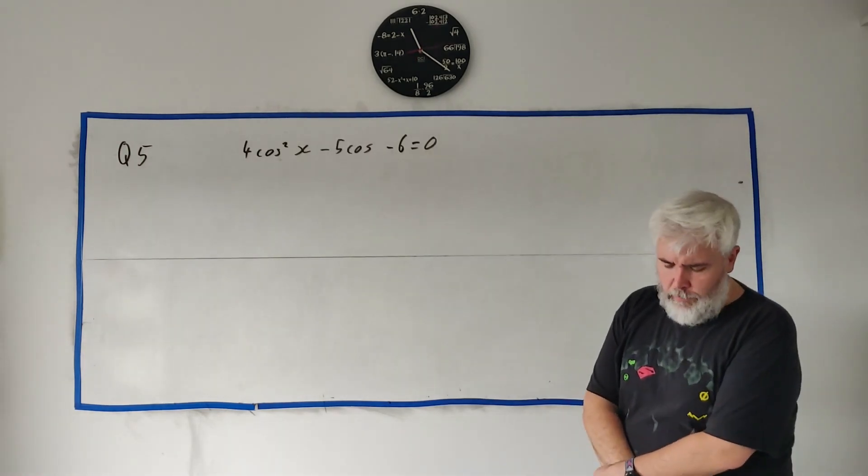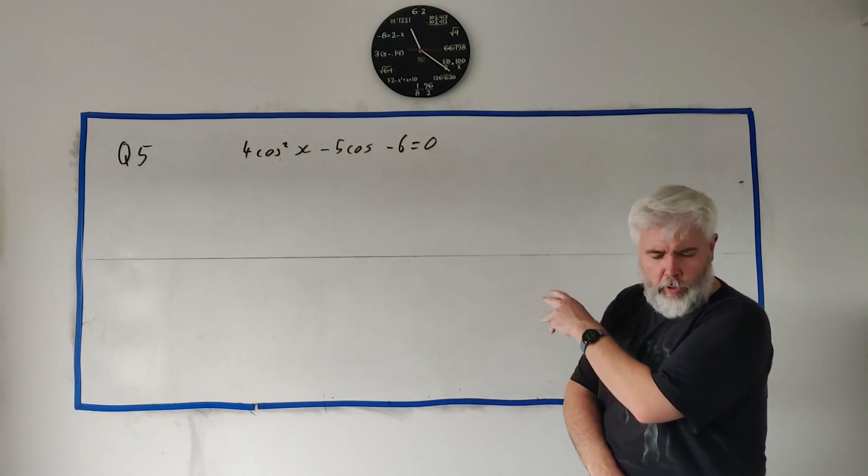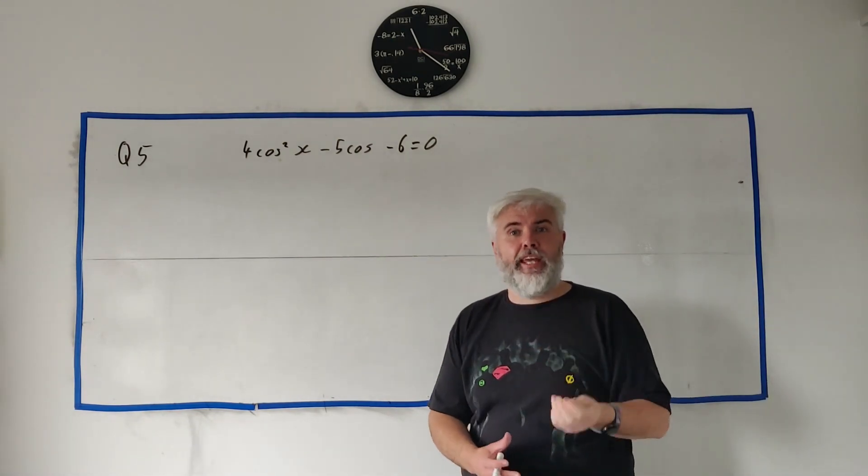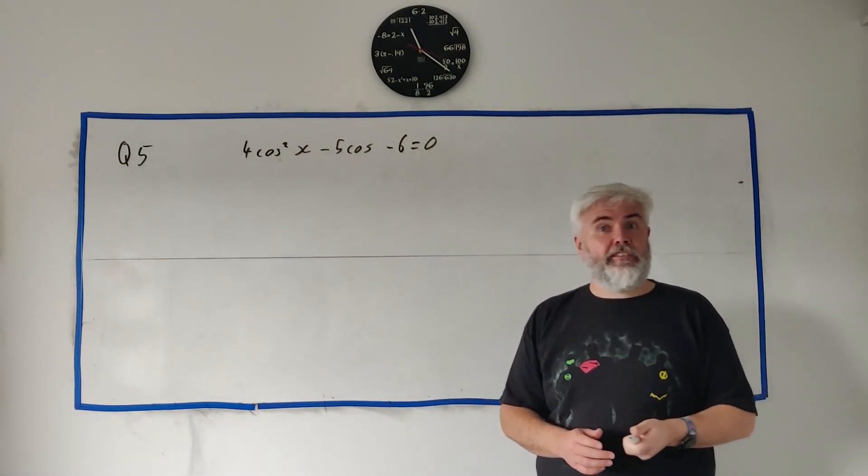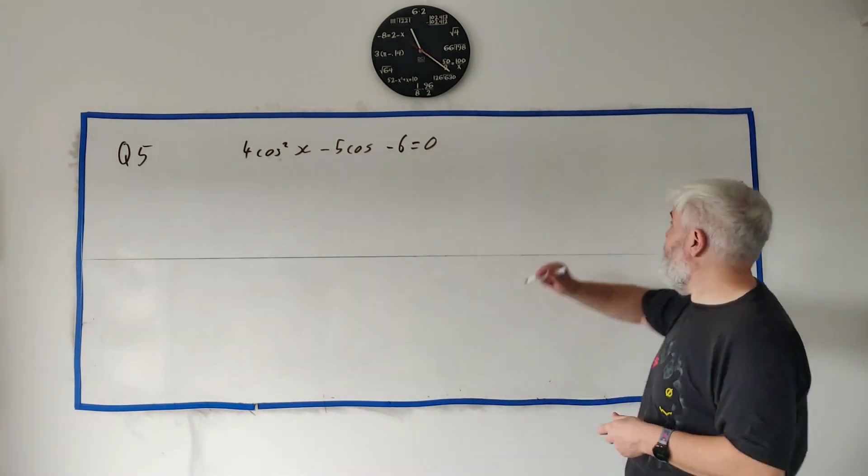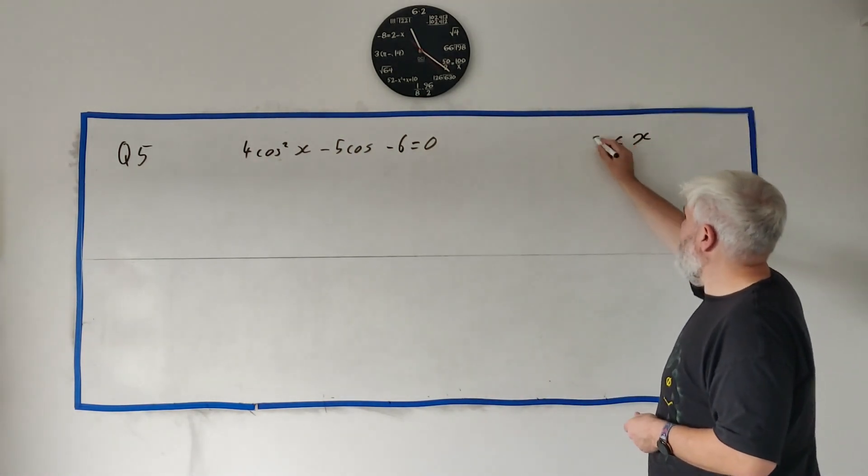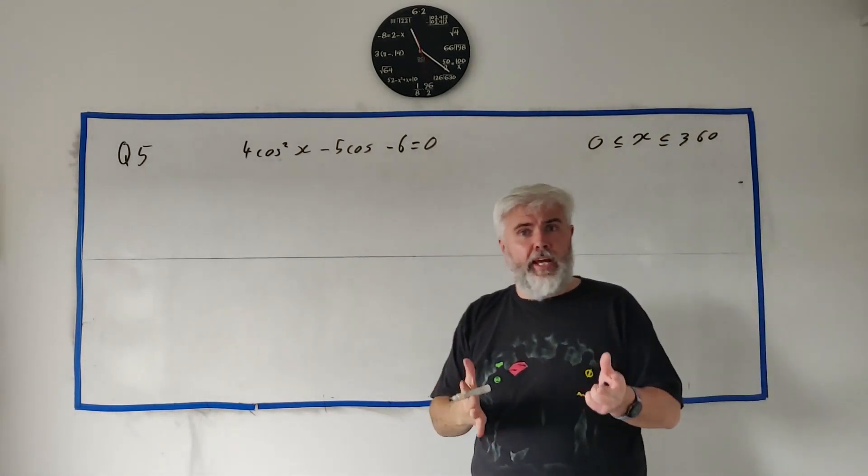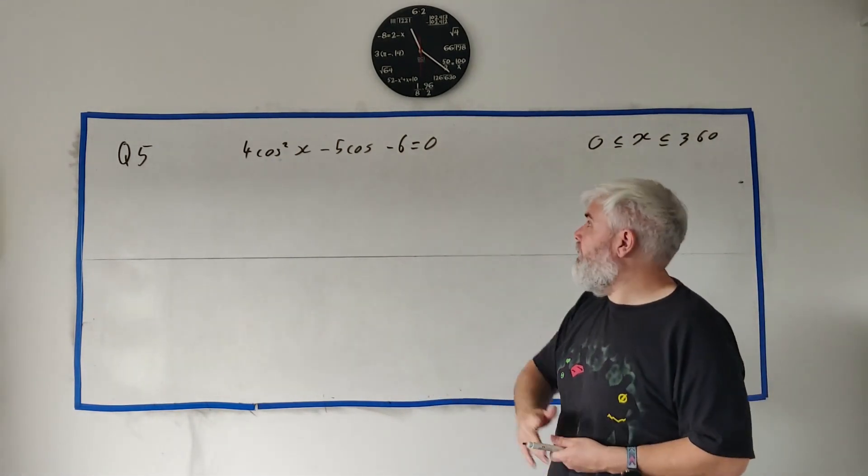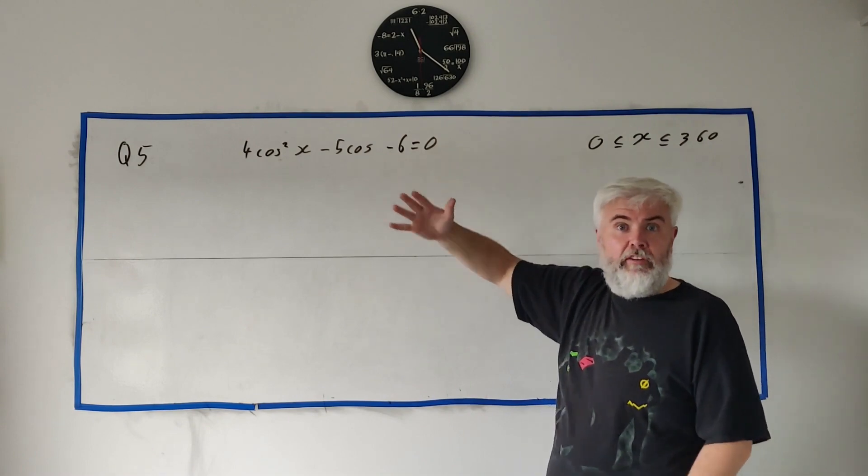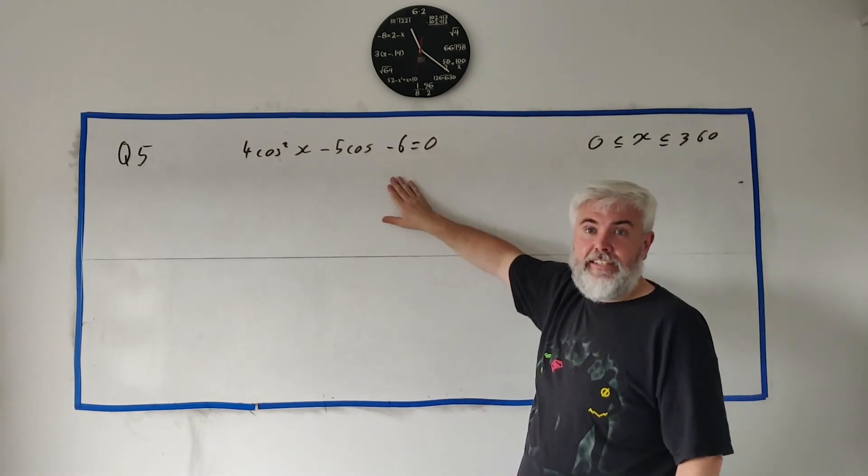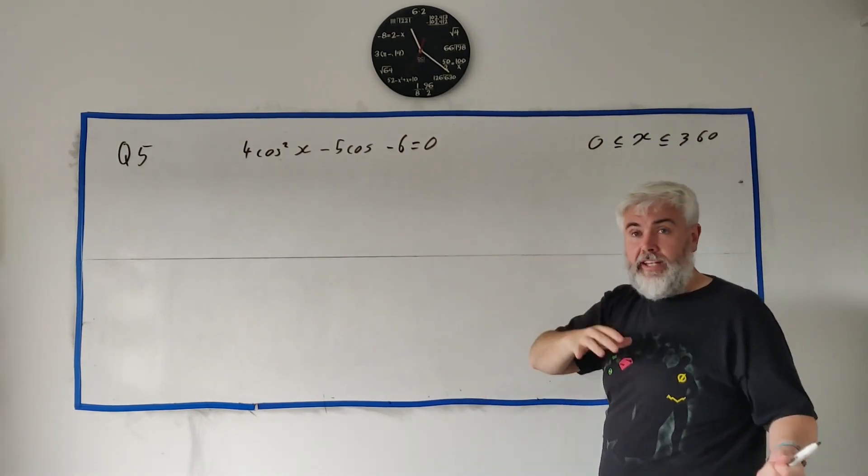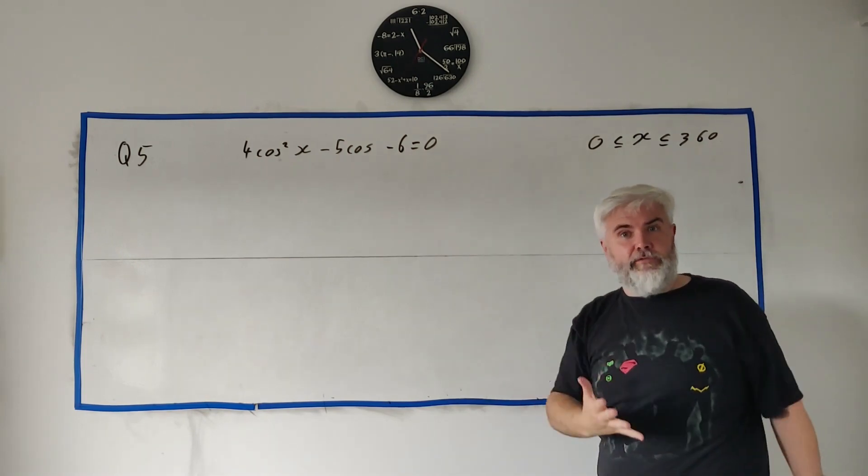So for part b, I haven't wrote it again, but they basically give us the same thing as part a and just ask us now to solve it between x between zero and 360. But let's not solve that question. That's too hard of a question to solve. Let's solve what we found in part a. We change that into this. And so if we solve that, we solve what they asked for.